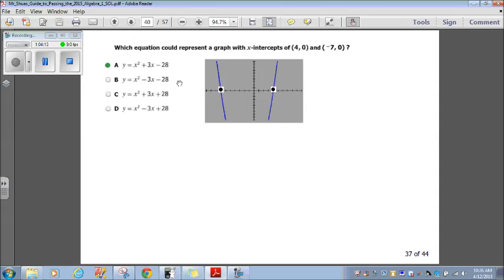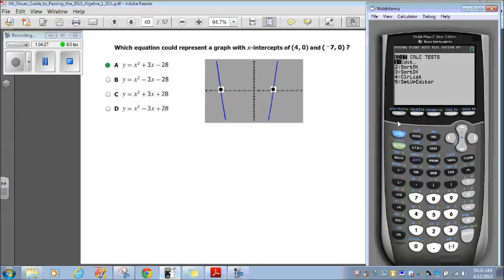Let's go on to 37. Which equation could represent a graph with x-intercepts of positive 4, 0, negative 7, 0? Easiest way, punch each of them in and find out. So, we start with our first one here. Now, if I go to y, punch in x-squared plus 3x minus 28, we graph it. And, lo and behold, I get 1, 2, 3, 4. That's 4, 0, negative 1, negative 2, negative 3, negative 4, negative 5, negative 7, 0. Our first one. Boom. That's it. We don't need to do the other three. Our first one matches the graph.